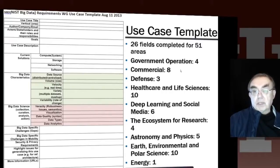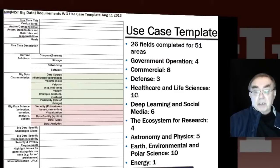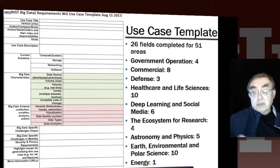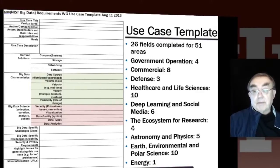Eight of the 51 were commercial use cases, three were defense, ten were healthcare and life sciences — some of which were operational applications in the healthcare industry. We also have deep learning, where a lot of progress has been made in analytics, and social media analysis — two very hot areas joined together. Four use cases form the ecosystem for research, describing general cross-cutting features. Five are in astronomy and physics, ten in Earth, environmental, and photoscience, and one in energy.